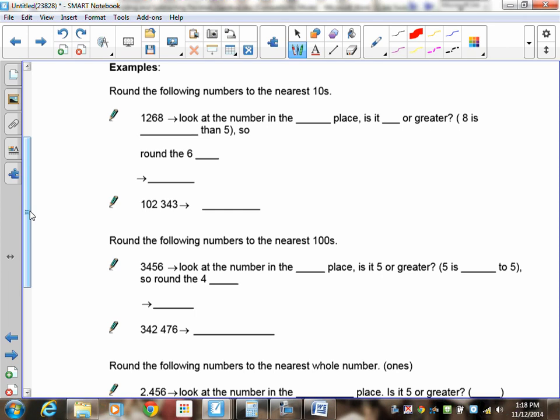We want to round this to the nearest tens place, so you have to identify which of these numbers is in the tens place, and that is the 6. We're going to look at the number in the ones place because our cutoff is right here. We want to know, is it 5 or greater? 8 is greater than 5, so round the 6 up. Your answer is going to be 1,270. Now, 102,343, round that to the nearest ten. Your cutoff is right here. The 3 does not change the 4, so you should have 102,340.